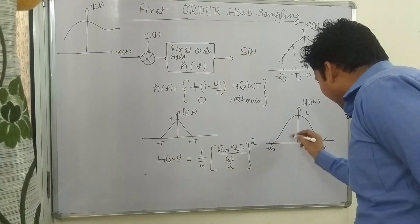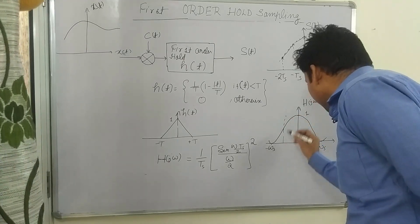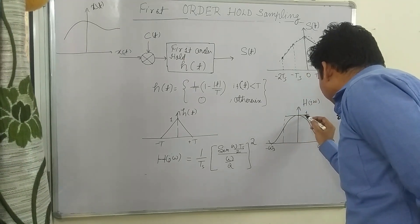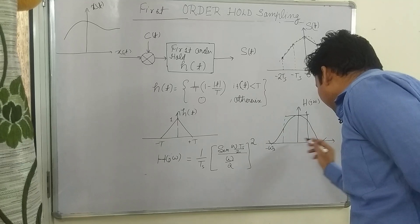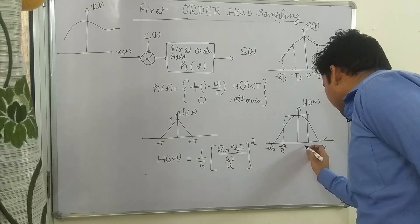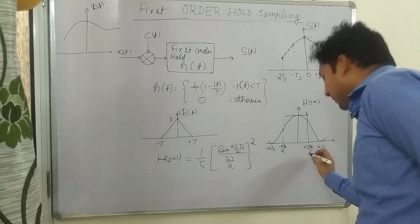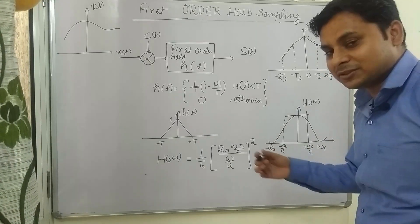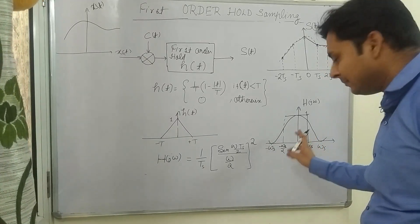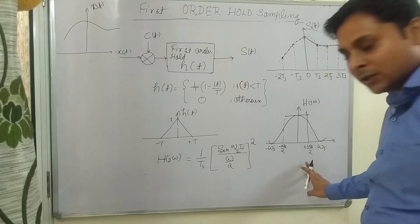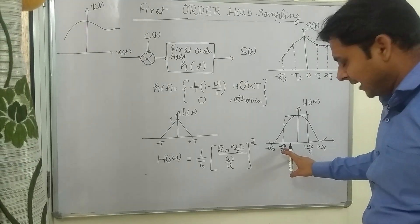ωs. And the ideal function, if I draw that which will give the ideal result, will be minus ωs/2 to plus ωs/2. You can see by sampling theorem, ωs will be 2ωm, means it will be minus ωm to plus ωm. And in place of ωs if you put 2ωm, then it will give